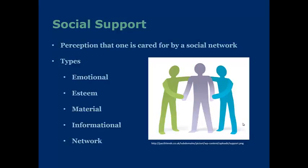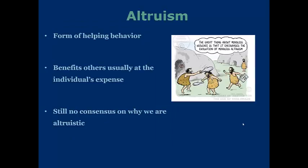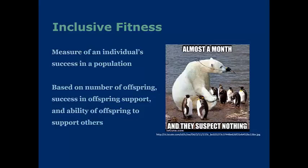Social support is the perception that one is cared for by a social network, and there are varying types — this can come from groups, peers, family, or organizations. Altruism is a form of helping behavior that usually benefits others at an individual's expense. There is still no consensus on why we are altruistic, but one theory is that it's an evolved trait where we like to help people similar to us, so indirectly we are helping ourselves. Inclusive fitness is a measure of an individual's success in a population, based on the number of offspring, the success of offspring support, and the ability of offspring to support others.